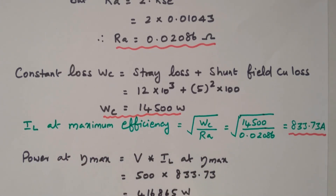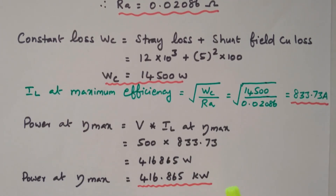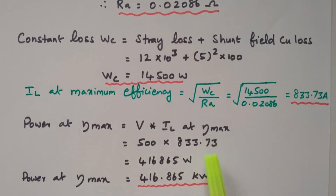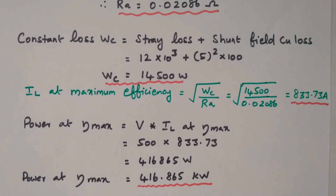The power at maximum efficiency = V × IL(max efficiency) = 500 × 833.73 = 416,865 watts = 416.865 kilowatt. In this problem we have calculated the armature resistance as well as the power at maximum efficiency. Subscribe this channel for more videos and notifications; soft copy of this material is available in the drive, link in the description box. Thank you for listening.